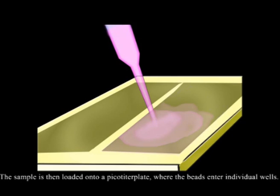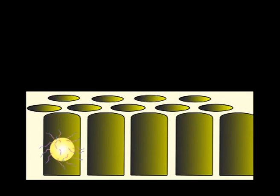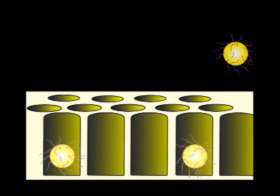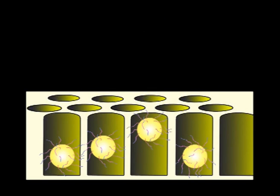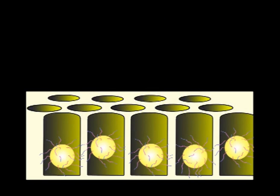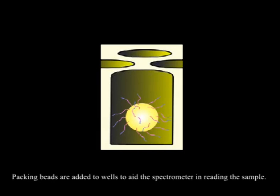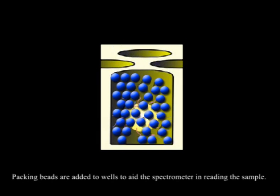The sample is then loaded onto a picotiter plate, where the beads enter individual wells. Packing beads are added to wells to aid the spectrometer in reading the sample.